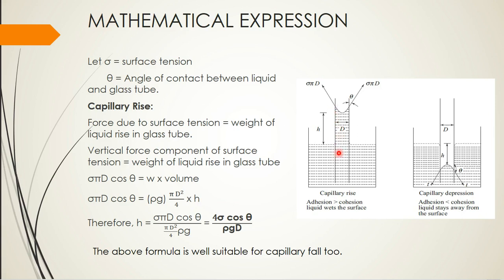For capillary rise, the force due to surface tension should be equal to the weight of the liquid risen in the glass tube. The vertical force component of the surface tension is what we need — since the weight acts exactly downwards, we take the vertical component of surface tension acting upwards. The vertical component is sigma times pi times d times cos theta, where sigma is surface tension and pi times d is the circumference of the tube.